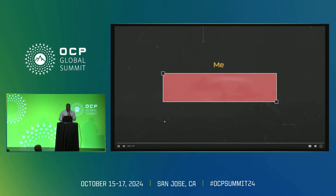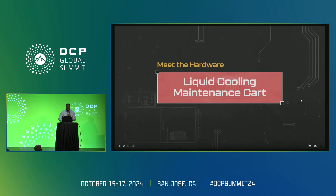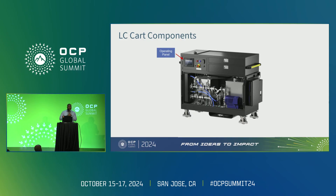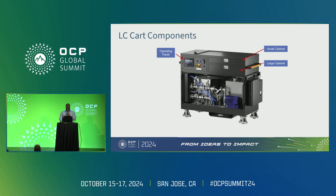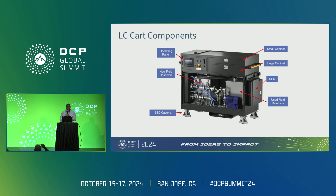To recap what we saw in the video: the operating panel houses the HMI with all the different indications — error logs and error alerts — for the cart. There's a small cabinet for PPE or small items you want to bring through the data center, and a large cabinet for all the auxiliary hoses. The UPS serves as both battery and power supply, and the new and used fluid reservoirs keep fluids separated to avoid contamination. ESD casters prevent static buildup while moving the cart.